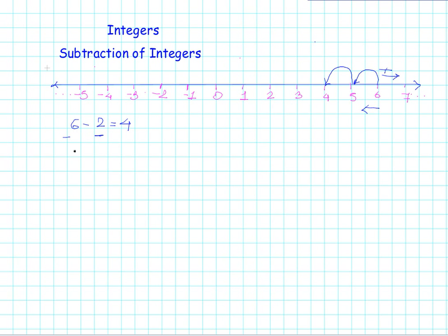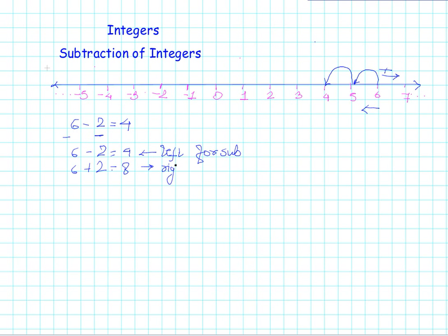So that was all about positive numbers. We had 6, subtracted 2 from it, and got 4 — moving to the left hand side for subtraction. And for addition, like 6 plus 2 equals 8, we go to the right hand side. You are already familiar with these things.